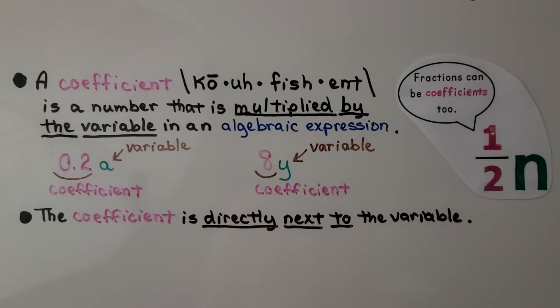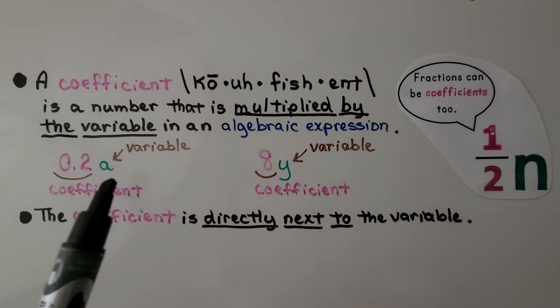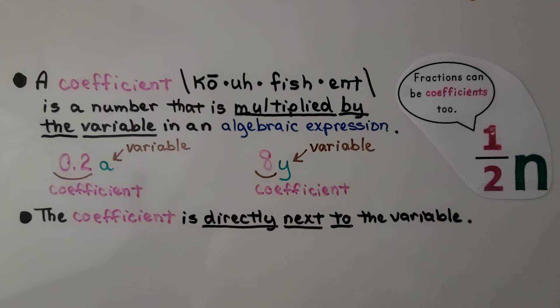A coefficient is a number that is multiplied by the variable in an algebraic expression. So this 2 tenths decimal is the coefficient, and a is our variable. Here we have 8y. The 8 is the coefficient, and the y is the variable. The coefficient is directly next to the variable.